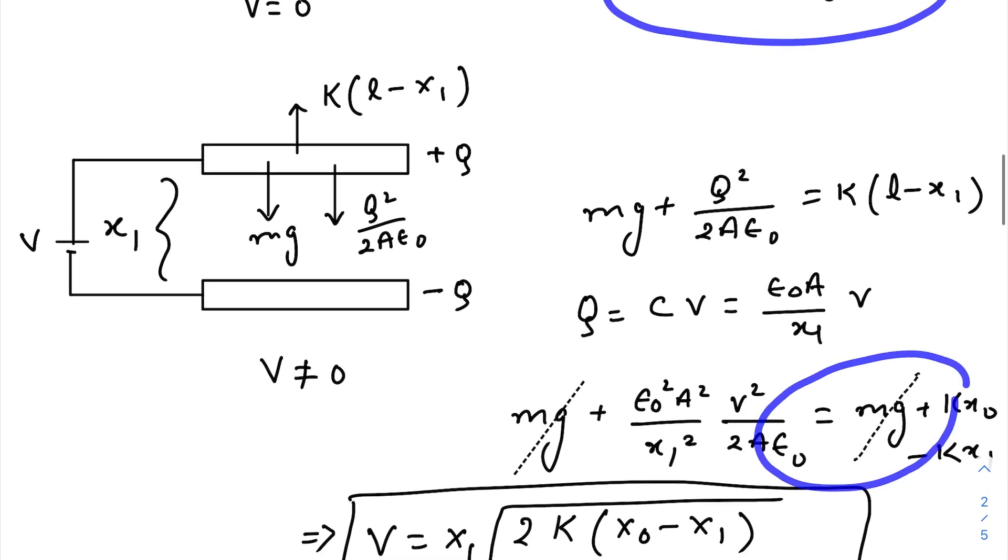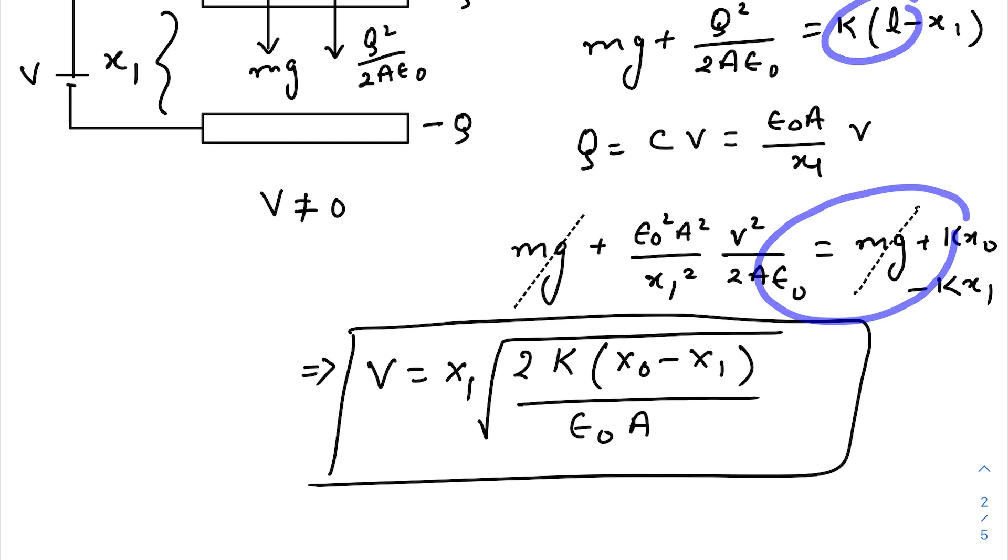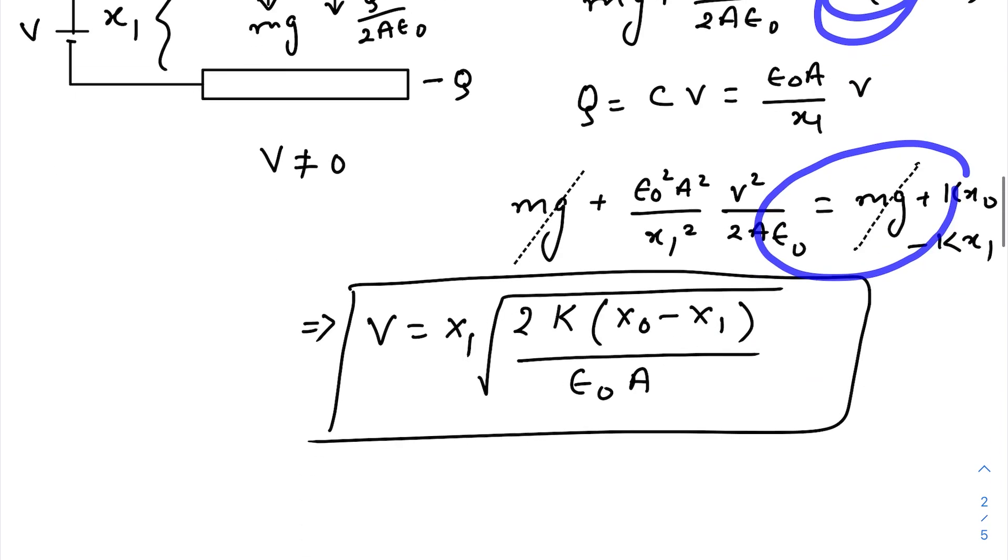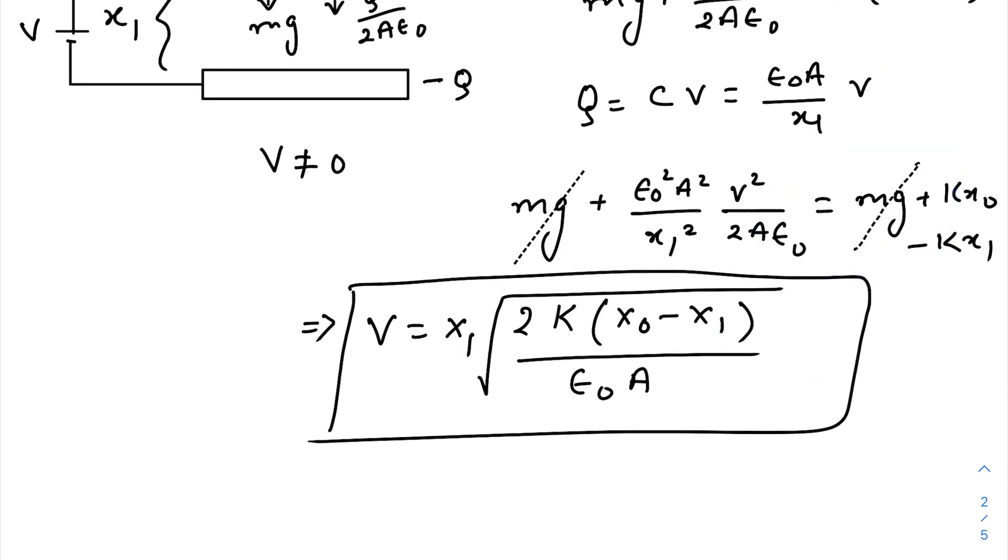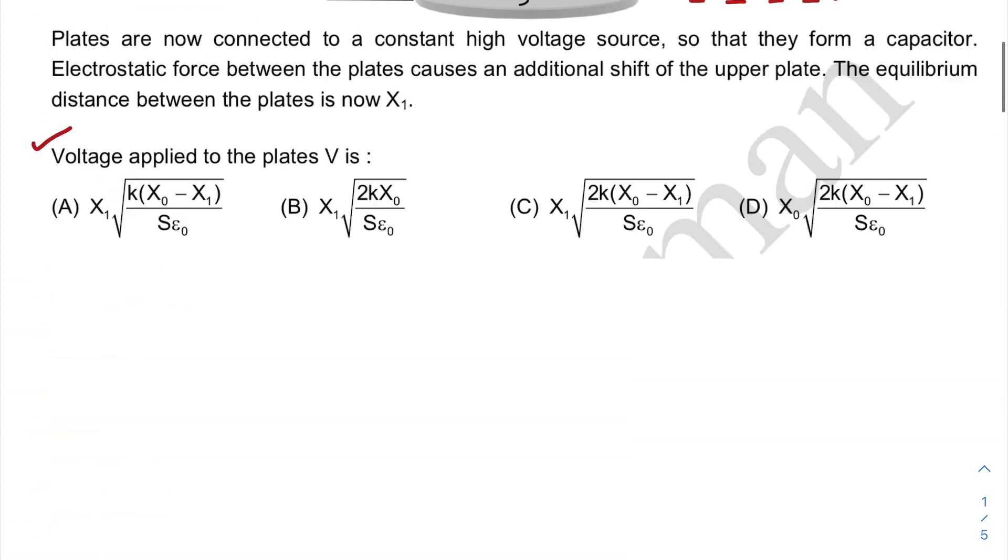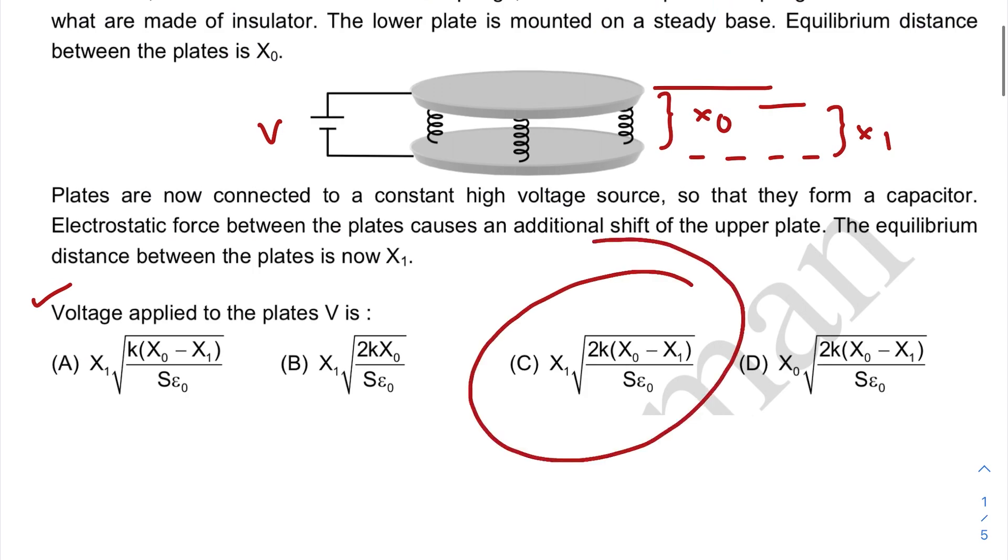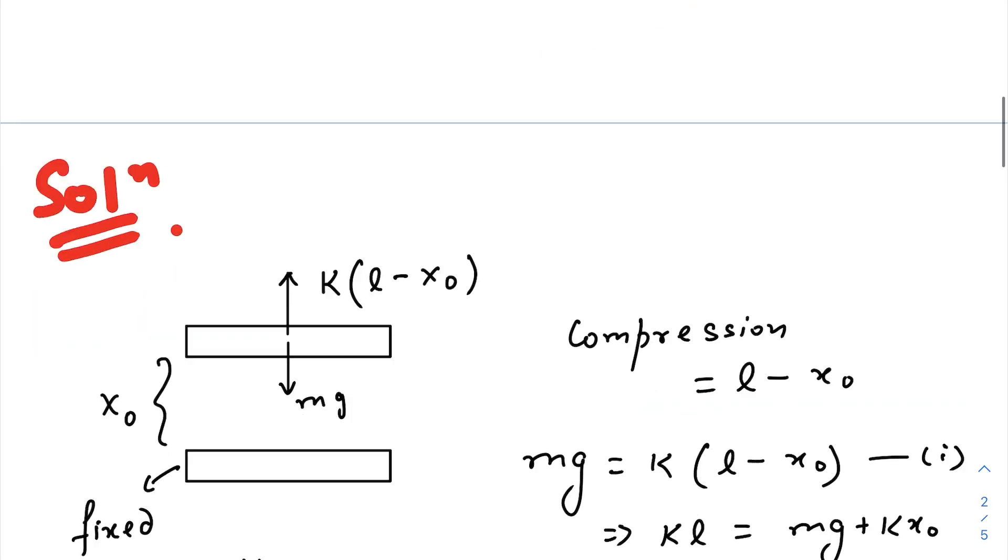As I have said earlier, we will be using the expression for k l. I have just used it here. Just use k l, replace that data. So this mg gets cancelled out. And after solving all these things, you will get the expression for V. So option C is correct.